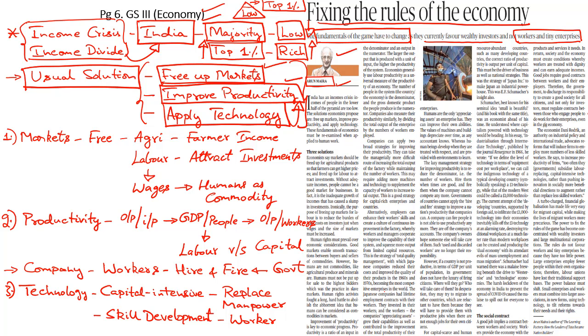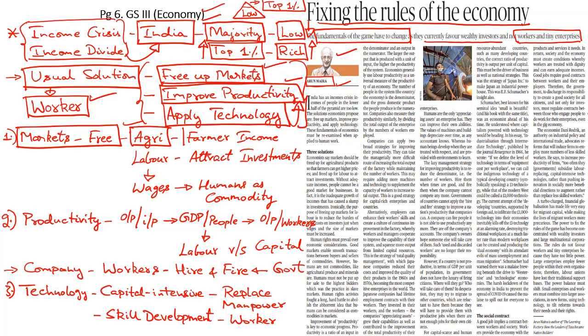However, the writer says that such traditional economic solutions are not sufficient to address this massive challenge. He calls upon the government to fix the fundamentals of the game and change the rules of the economy in order to ensure that the rules currently favoring wealthy investors start favoring the workers and tiny and small enterprises. The writer says that when markets are freed up, the general argument is that agricultural products can be directly sold by farmers in the market, thereby leading to an increase in their income. But one cannot ignore the fact that in such a free market, farmers might actually be exploited by the big industries because of their much larger bargaining power, which doesn't exist with the farmers.